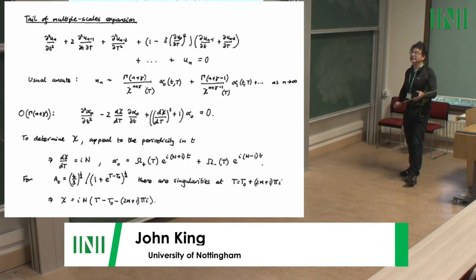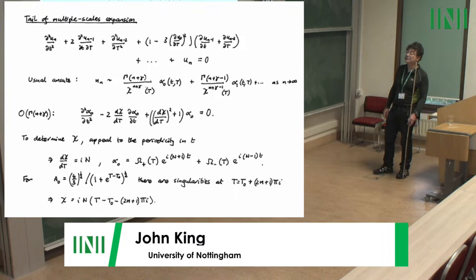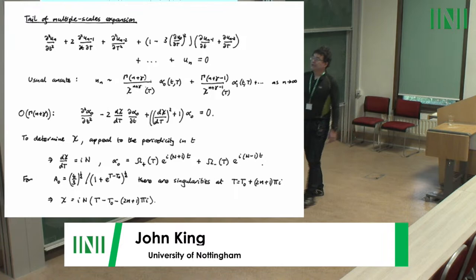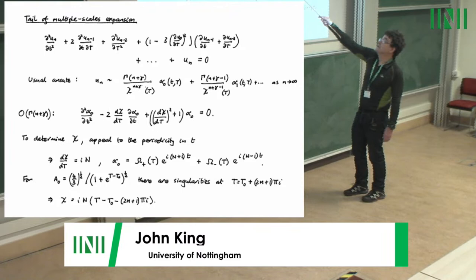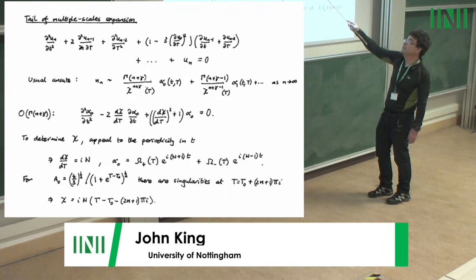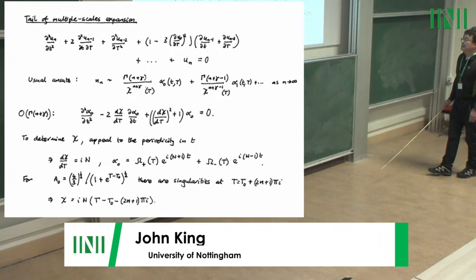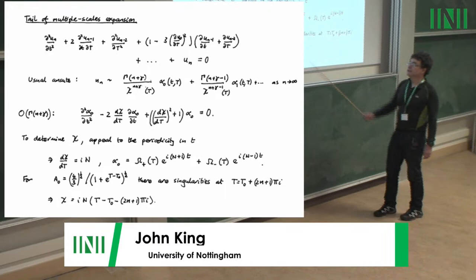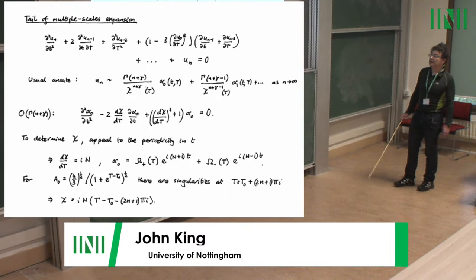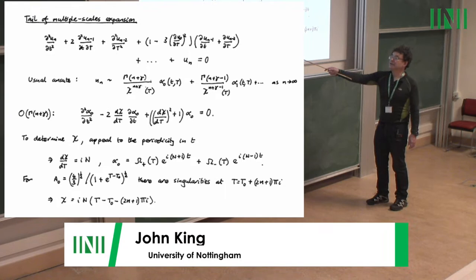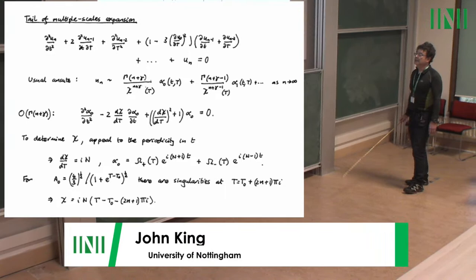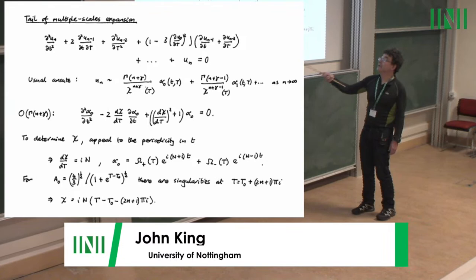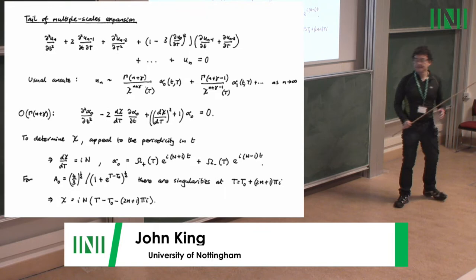To fix the singulant you use the fact that you have 2π periodicity in little t: the quantities here need to be 2π-periodic in little t, and going through the calculation, dchi/d(big T) times this factor has to be i times an integer. With that choice, alpha-naught takes a specific form involving omega-plus or omega-minus, which we don't yet know. This is a multiple scales problem, so even in the tail you need a solvability condition — you must go to next order before getting even the leading solution.